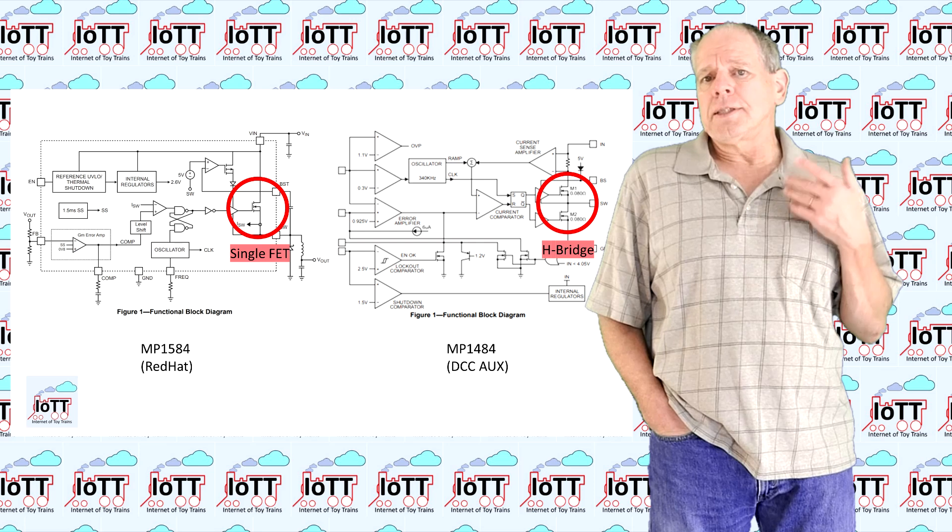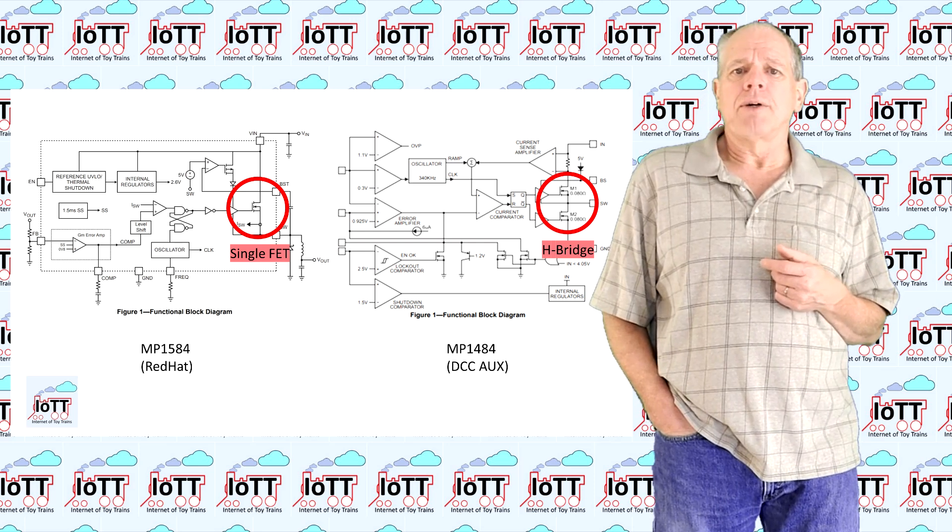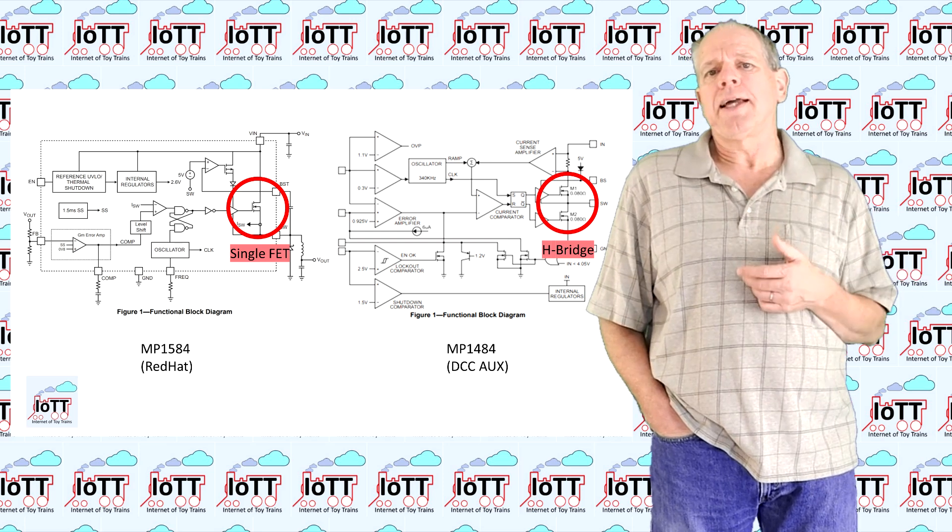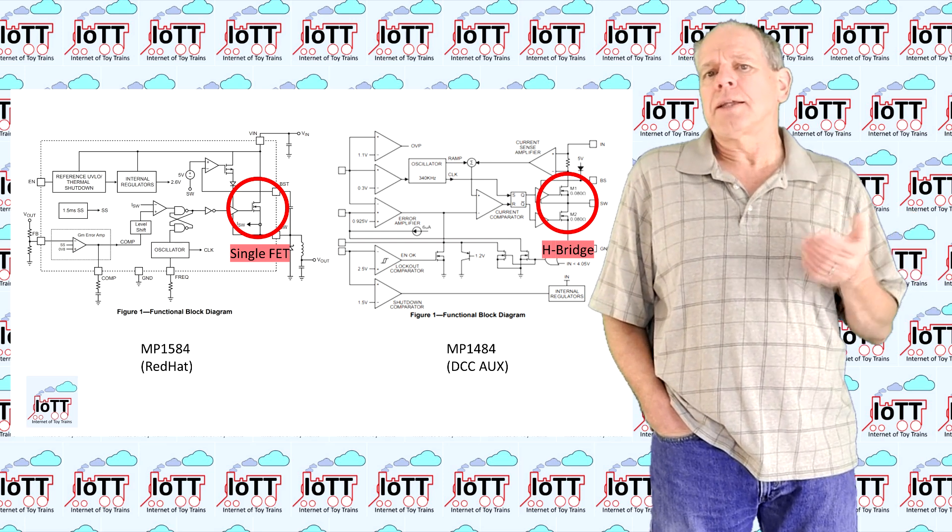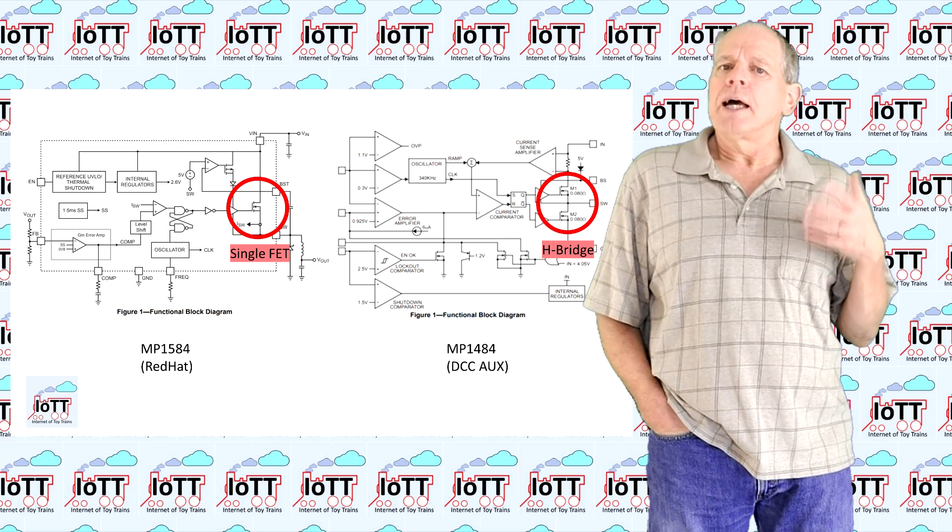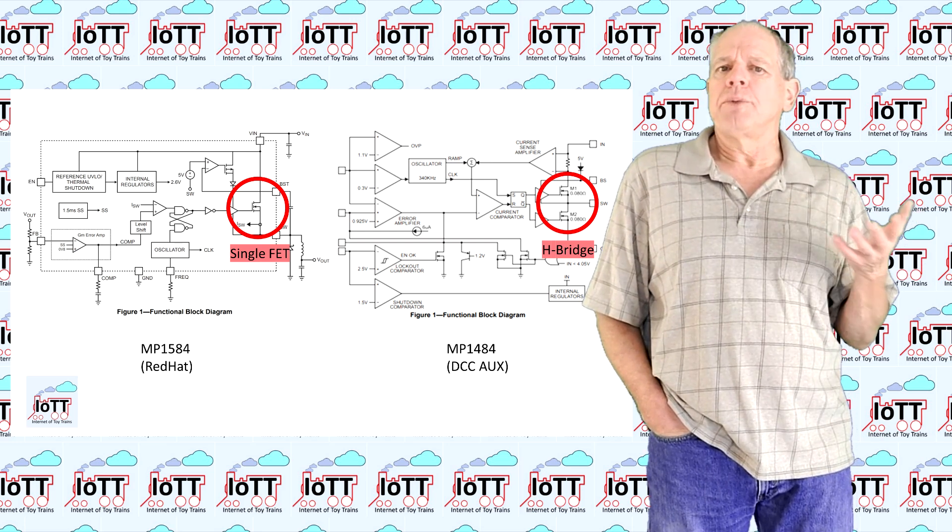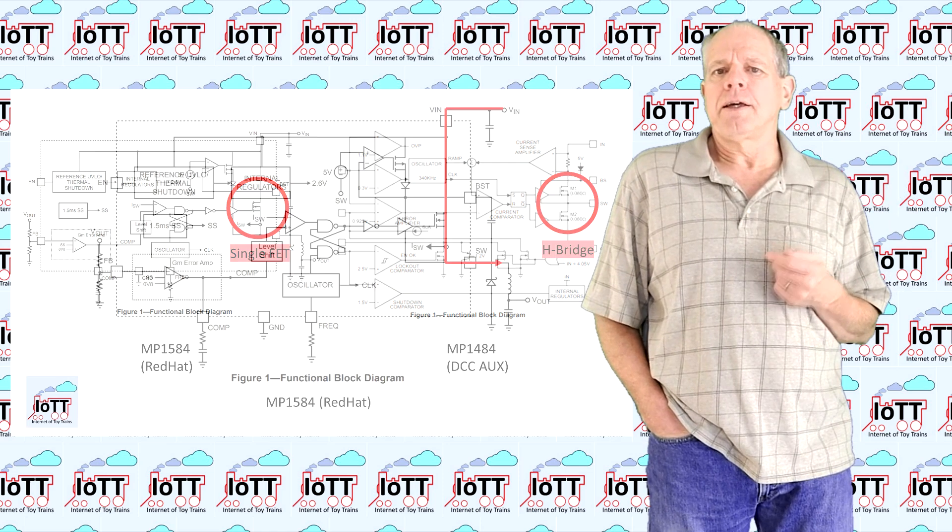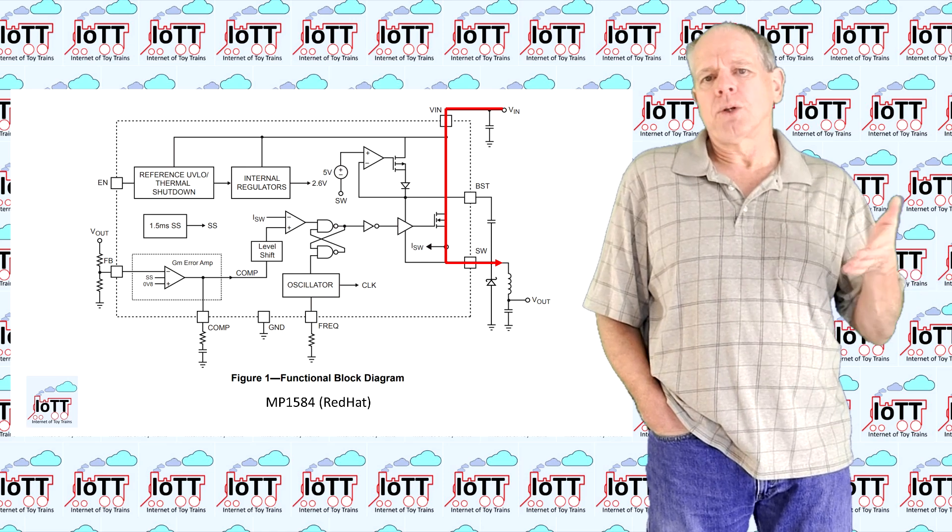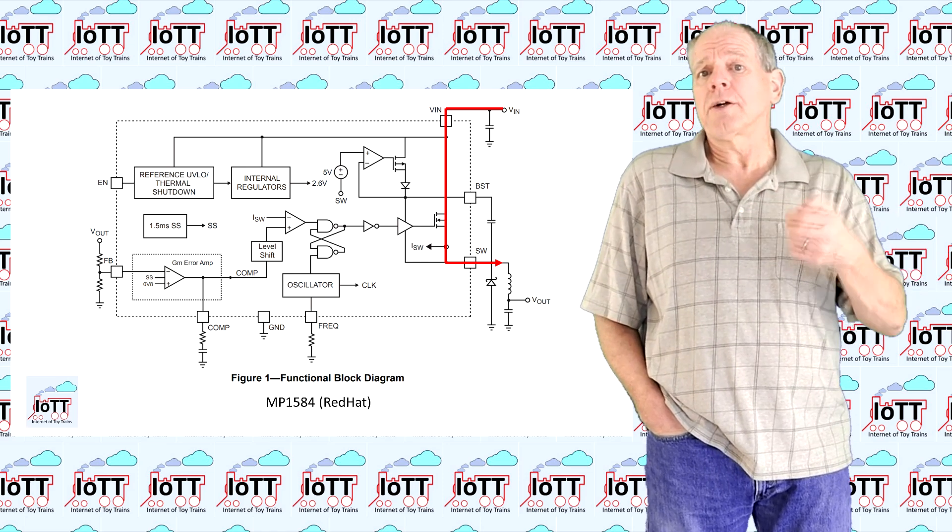What I found is a significant difference of the power driver. The MP1584 used on the Red Hat only has a single transistor to switch the output on and off. The MP1484 I am using for the AUX shield, on the other hand, features a half bridge, which means the output can not only source, but also sink current.